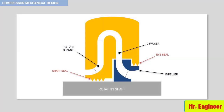Each impeller diaphragm contains one eye seal and one shaft seal. These seals are designed to minimize leakage from the diffuser to the inlet of the impeller and to the inlet of the next stage.